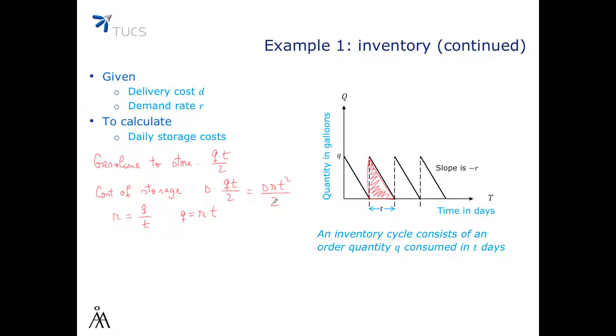And when we are adding the cost, we get that the cost per delivery cycle is D plus SRT squared divided by 2. And so the daily cost is going to be D divided by T plus SRT over 2.